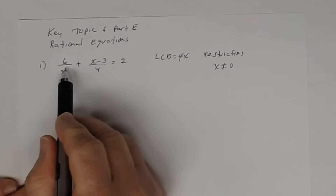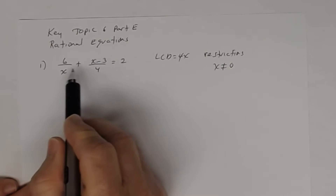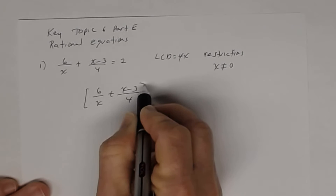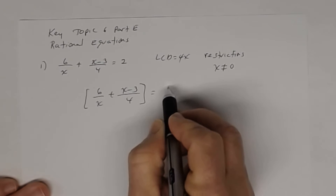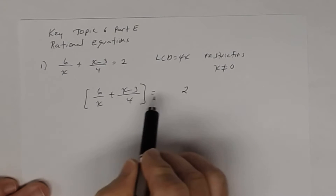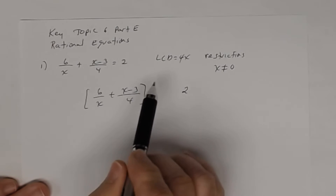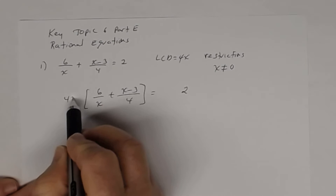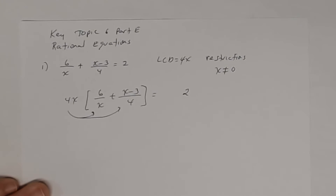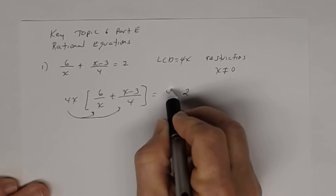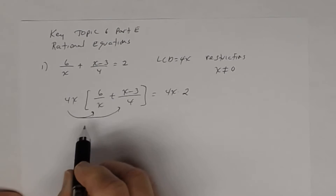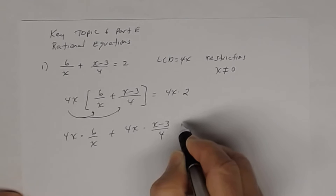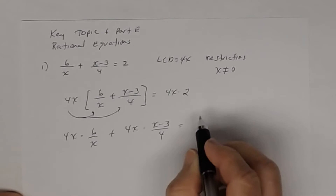The left-hand side has two rational expressions: 6 divided by x plus x minus 3 divided by 4, equal to 2. I'll rewrite this in brackets because both terms must be multiplied by 4x. Distributing, I get 4x times 6 divided by x, plus 4x times (x minus 3) divided by 4, equal to 4x times 2, which is 8x.